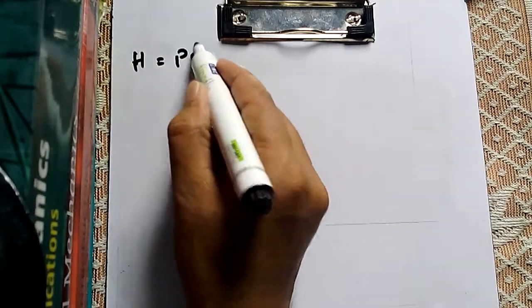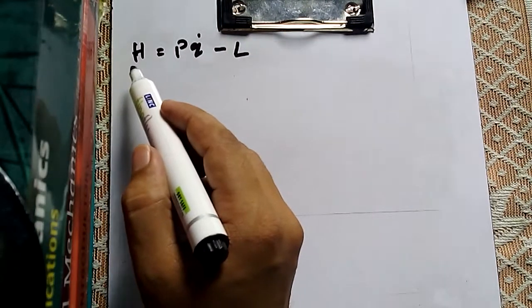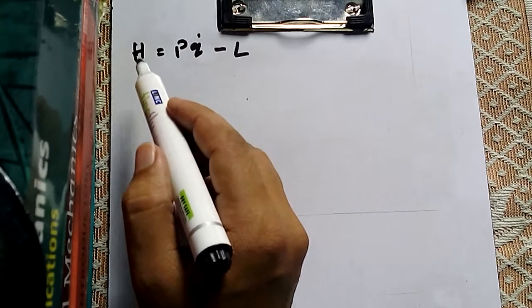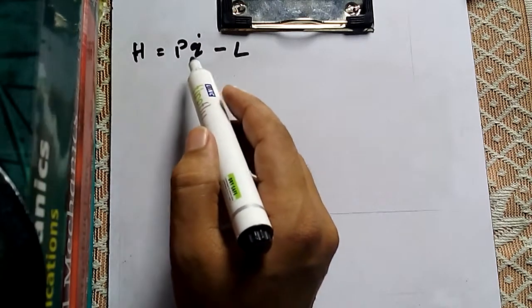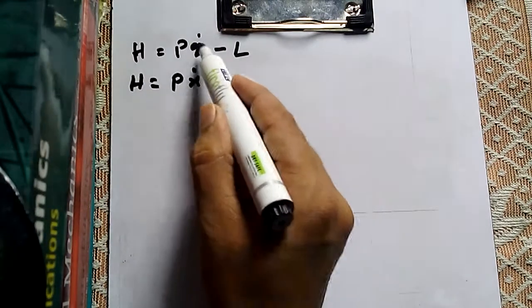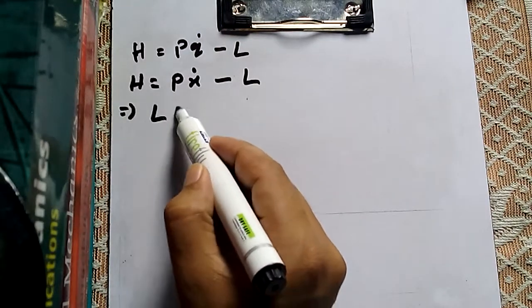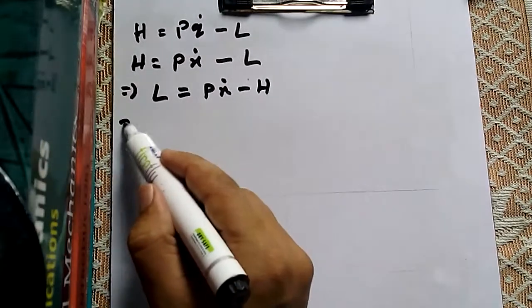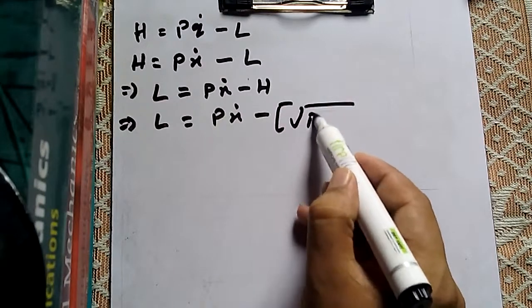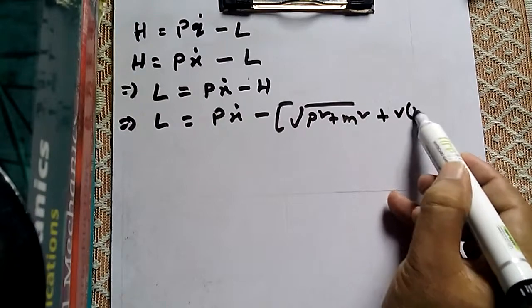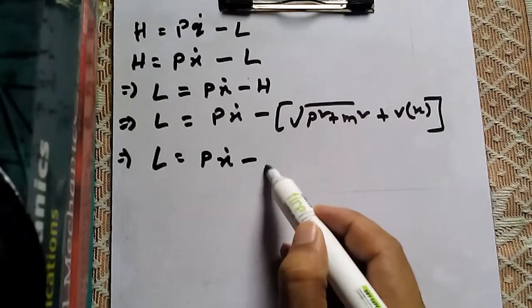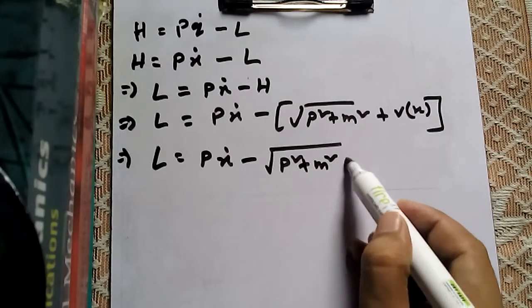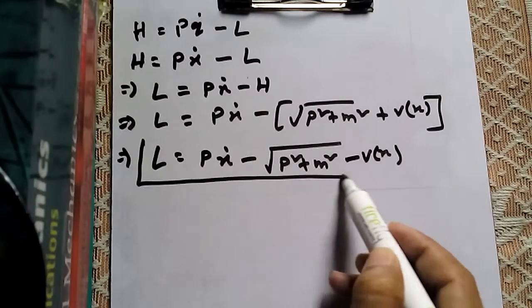In the Hamiltonian formulation, H equals P·q̇ minus L. This is not Hamilton's equation of motion; it is generally called Hamilton's function. So Hamilton's function is P·q̇ minus L. We write q̇ as ẋ, and L is to be found. So L equals P·ẋ minus H. Putting the value of H: L equals P·ẋ minus √(P² + M²) plus V(x).